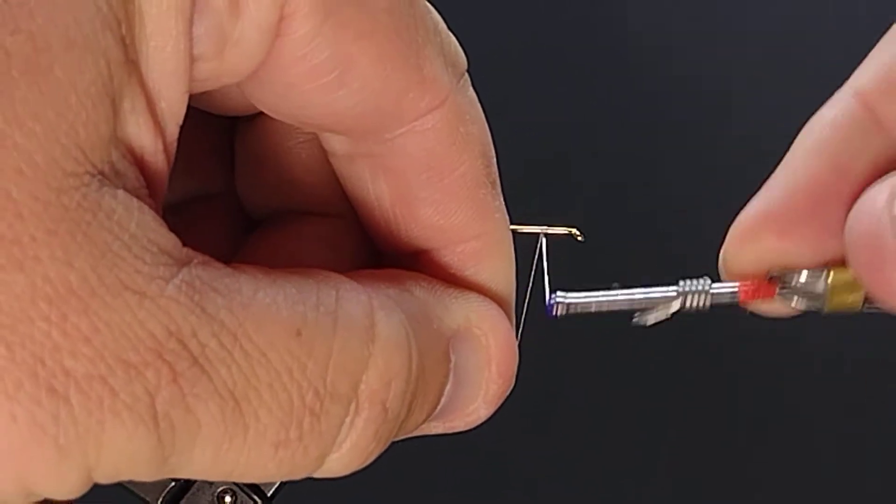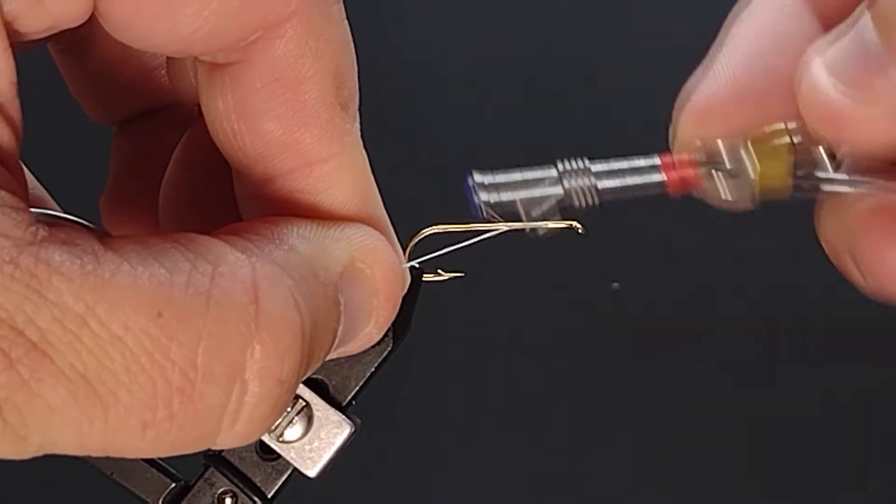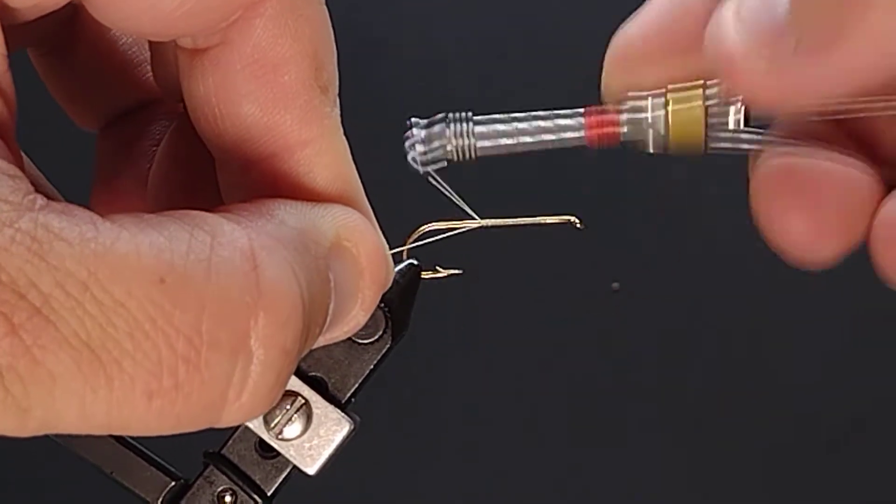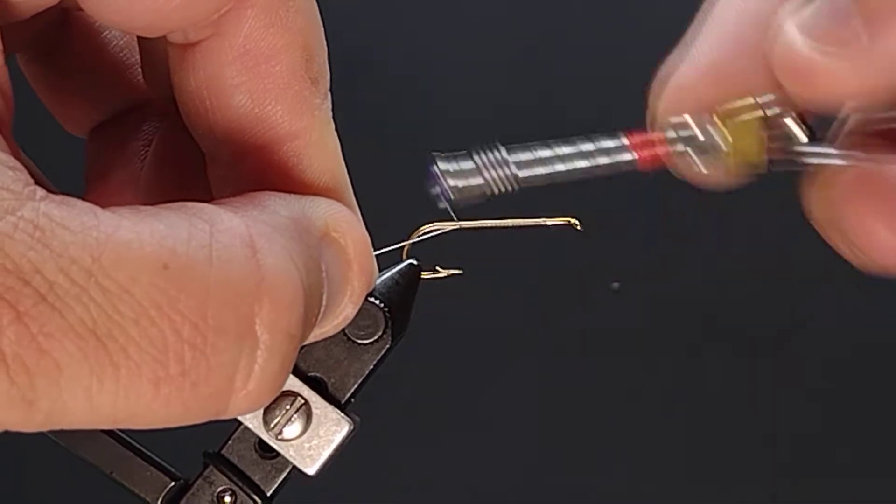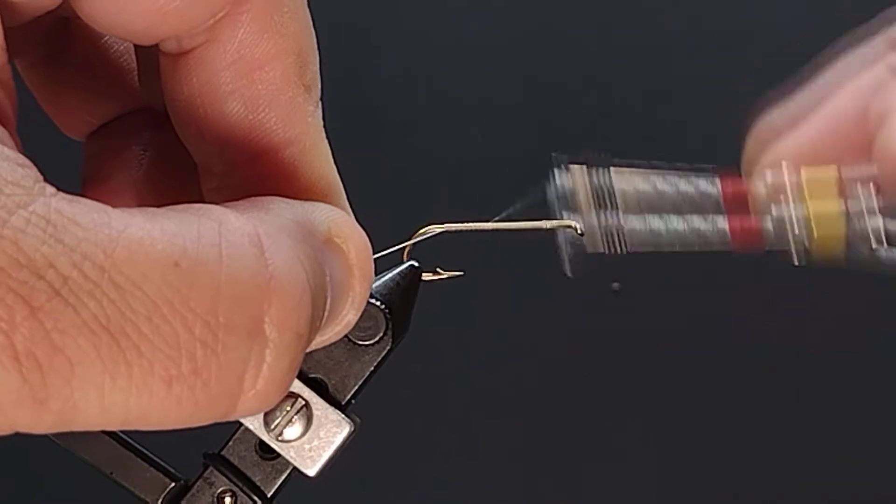I like to start with a base of thread here on the whole hook. This is foam. It's going to want to twist on the hook on you. So a base of thread that you can super glue the foam to is a good start.